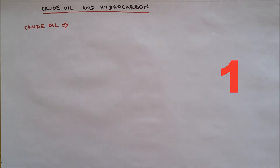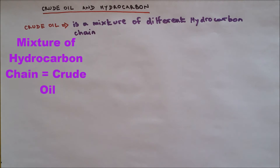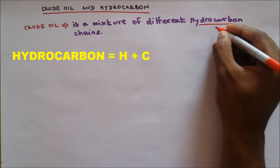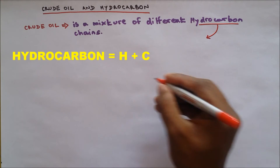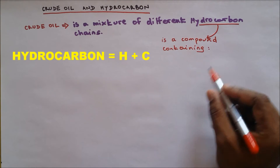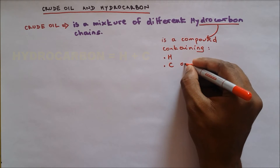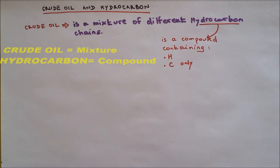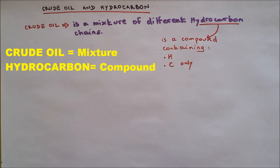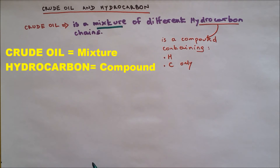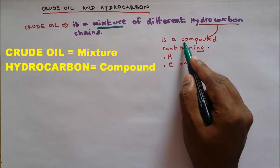What is crude oil? Crude oil is a mixture of different hydrocarbon chains. What is a hydrocarbon? Hydrocarbon is a compound containing hydrogen and carbon only. The main difference between crude oil and hydrocarbon chain is that crude oil is a mixture and hydrocarbon is a compound.